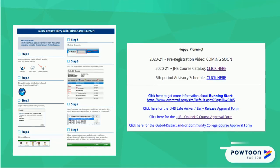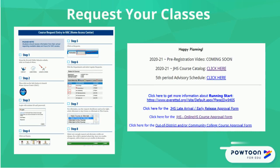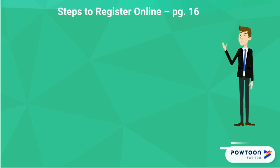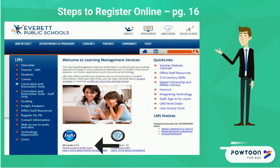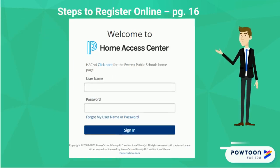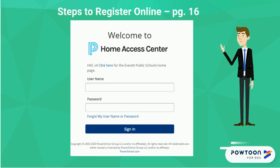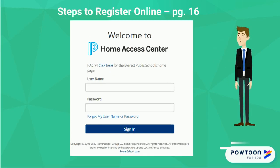You now have everything you need to request your classes for next year. Congrats, T-Wolf! The Jackson Counseling webpage and your course catalog have directions on how to enter your requests in the Home Access Center. To request courses, go to the district or Jackson website and select Grades and More in the top right corner. Then select the link to HAC. Enter your student ID and your district password to log in. This is the same way you reviewed your transcript online. Now select Schedule, then the Request tab, and you're ready to go.